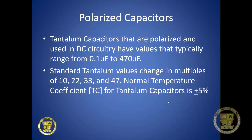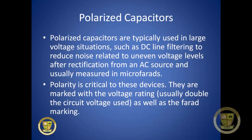There are two types of capacitors used in cell phone circuitry: polarized and non-polarized. Tantalum polarized capacitors used in DC circuitry typically have values ranging from 0.1 to 470 microfarads, with standard values changing in multiples of 10, 22, 33, and 47, and normal temperature coefficients of plus or minus 5%. Polarized caps are typically used in large voltage situations such as DC line filtering to reduce noise after rectification from an AC source, and are marked with their voltage rating and farad marking.